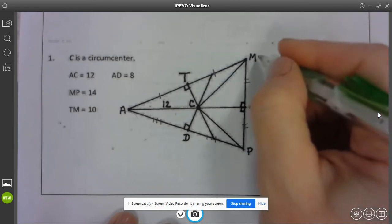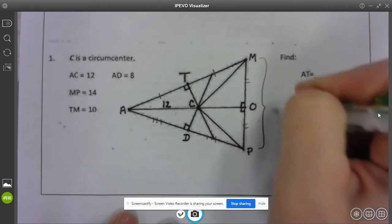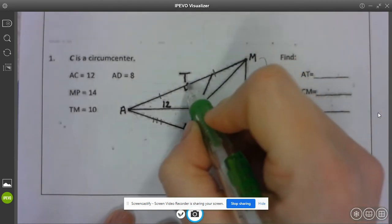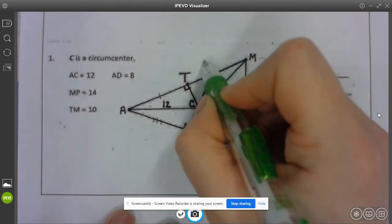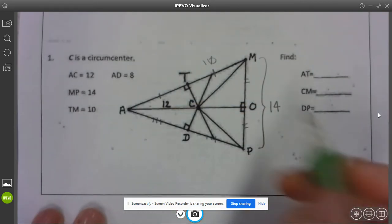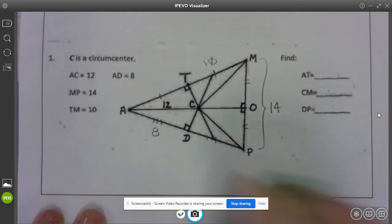Alright. So I have AC being 12. That's already labeled. MP so this whole side is 14 and then TM is 10. Oh, and then AD. I missed that one. And AD is 8.